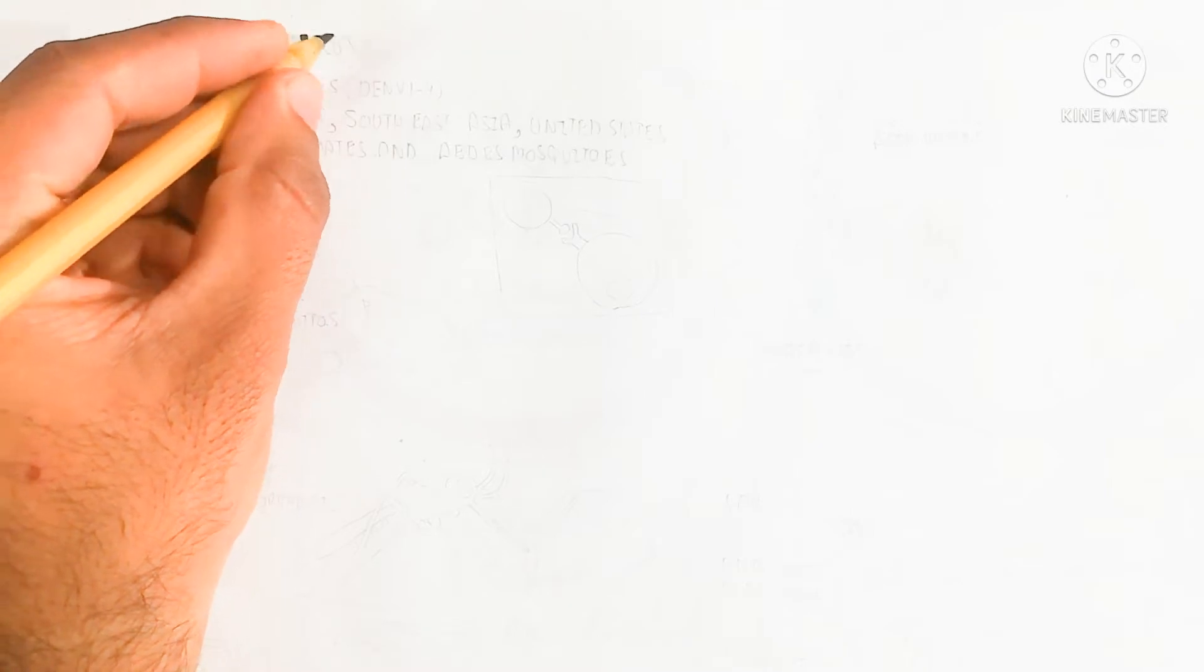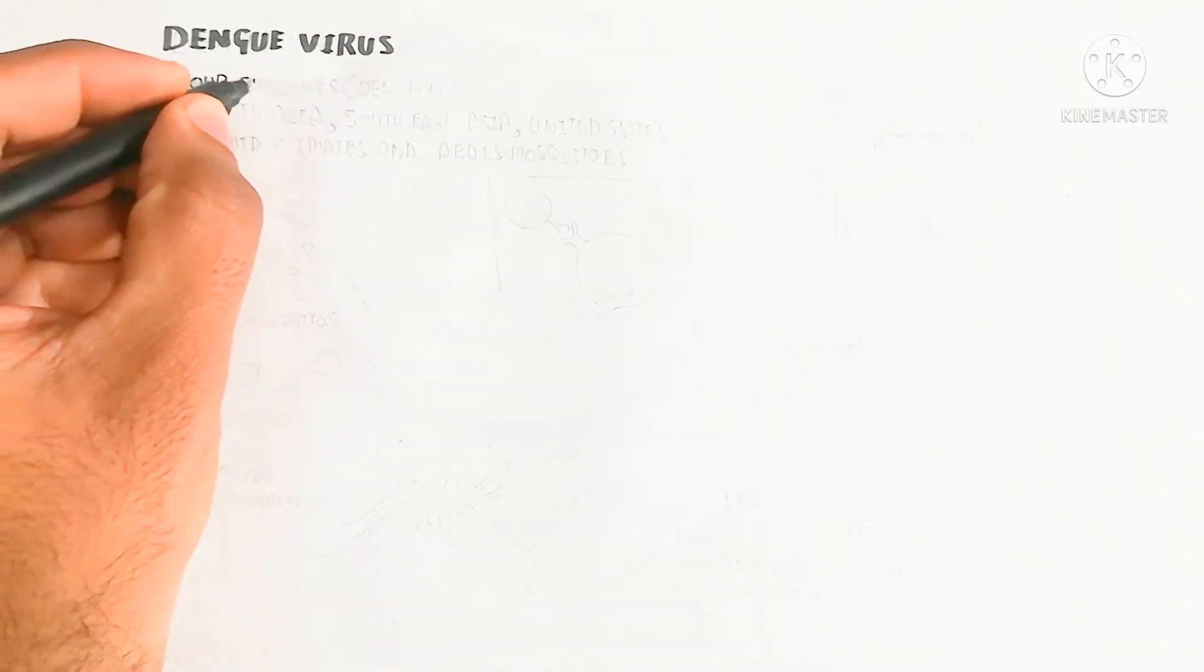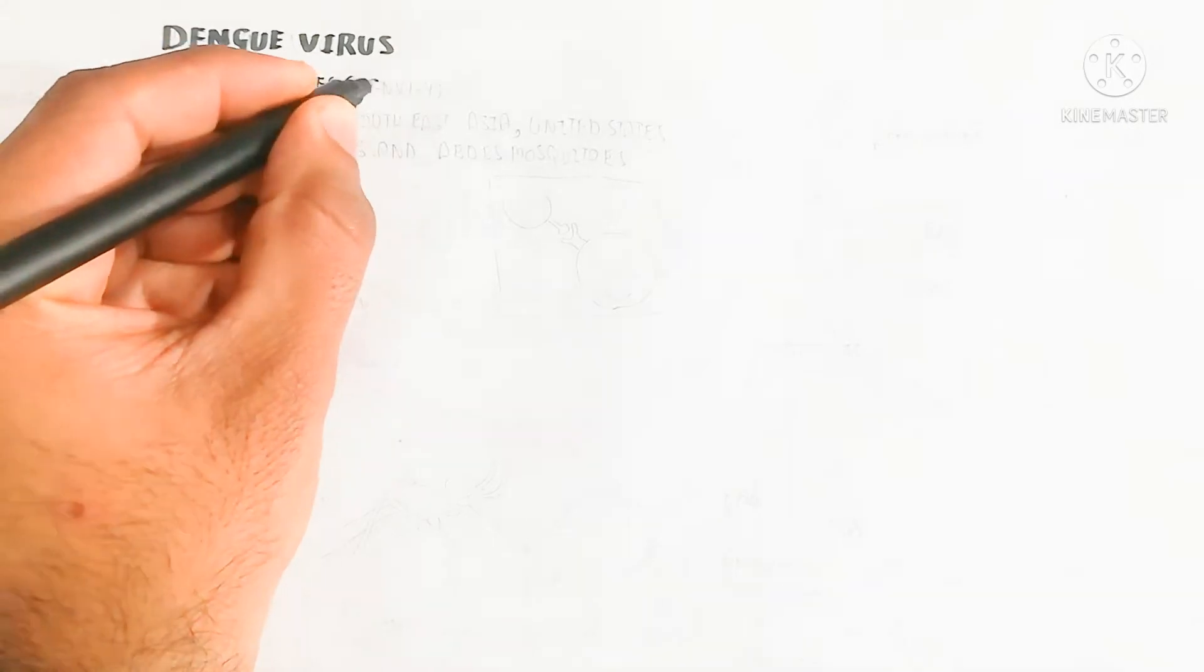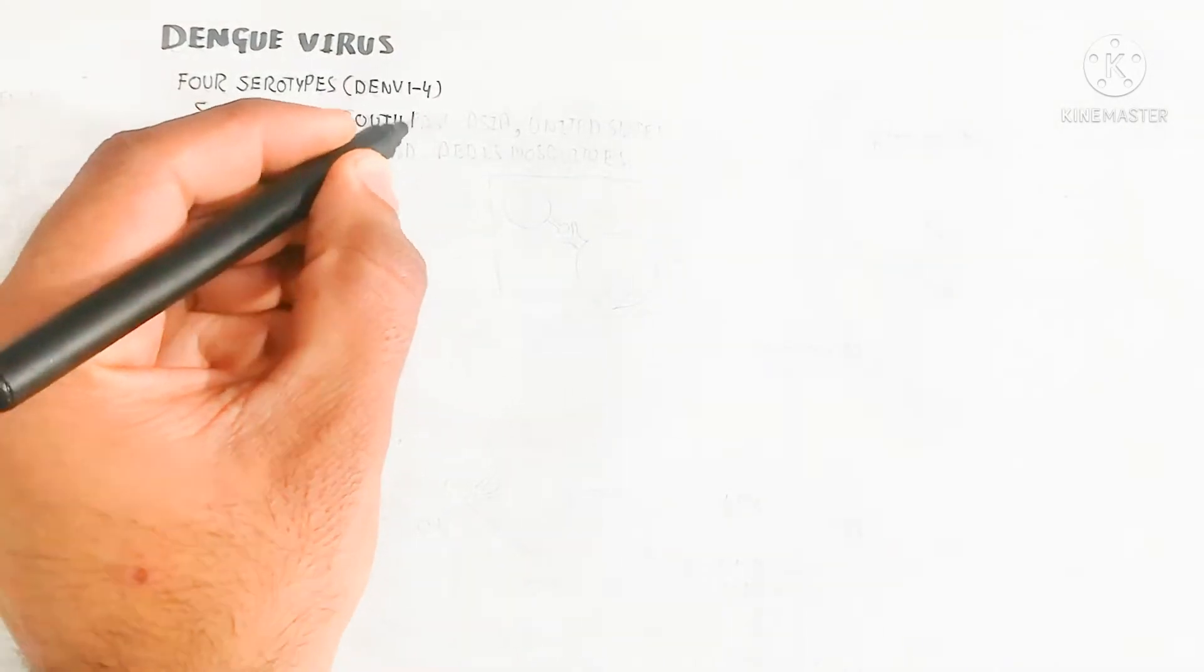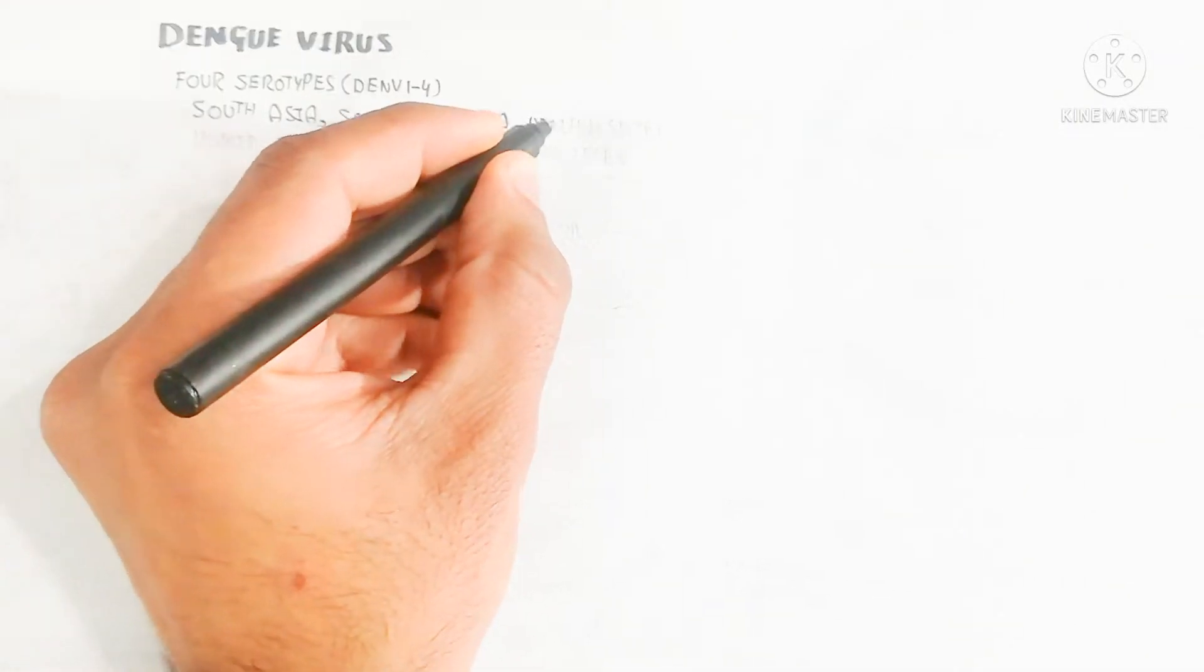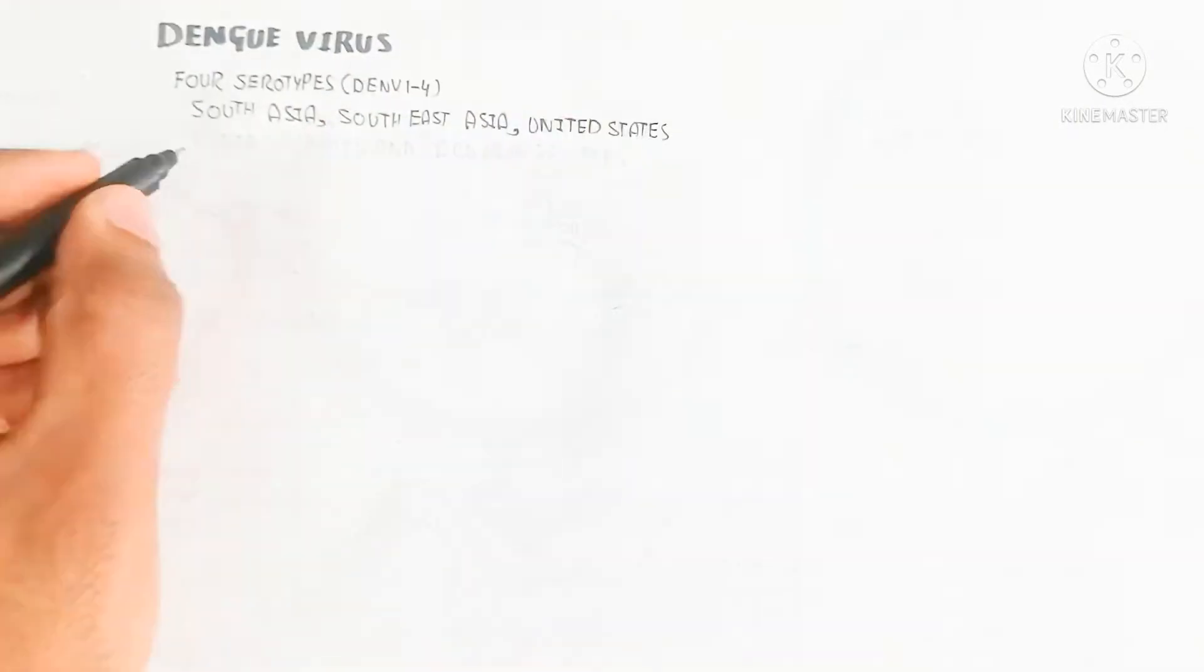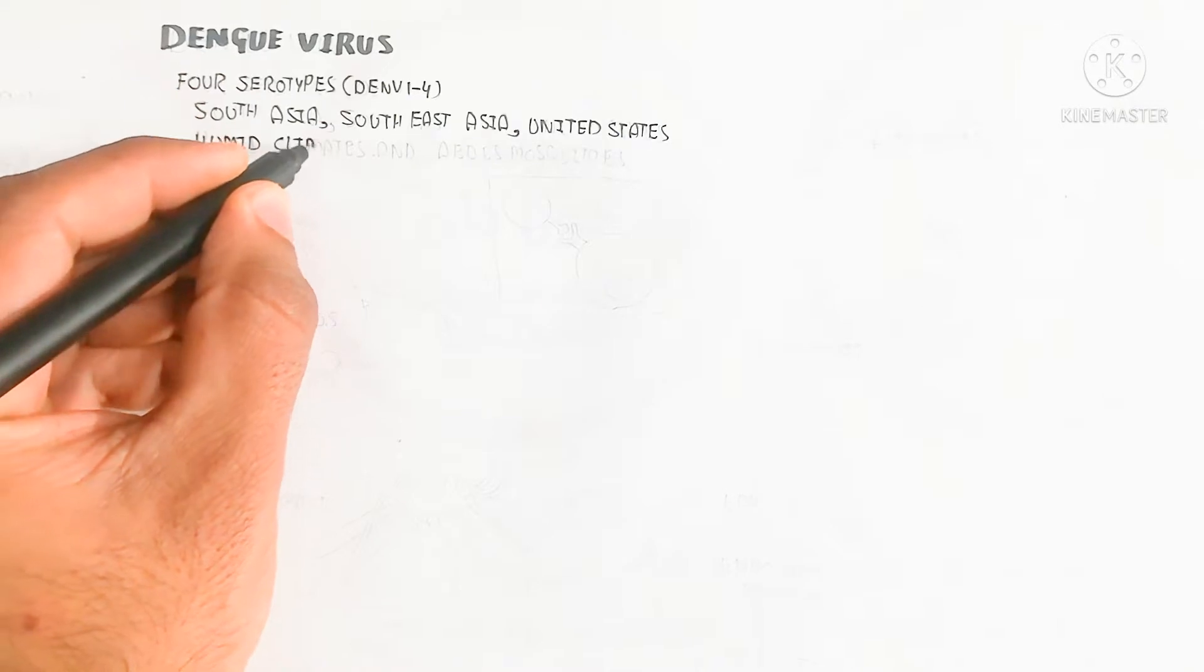In this video, we will discuss the Dengue or Dengue virus. The Dengue virus is the genus Flavivirus and the family is Flaviviridae. There are four serotypes, Dengue 1 to 4.